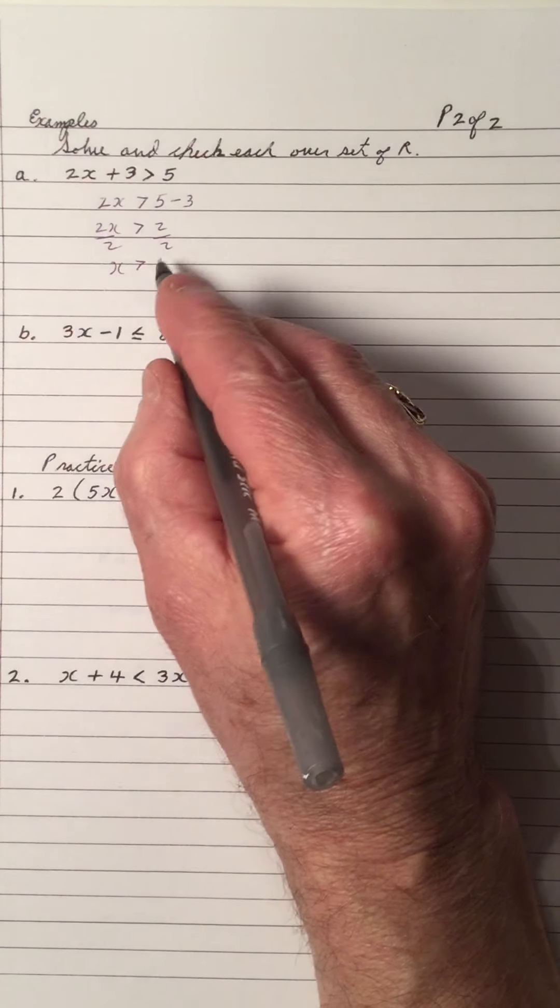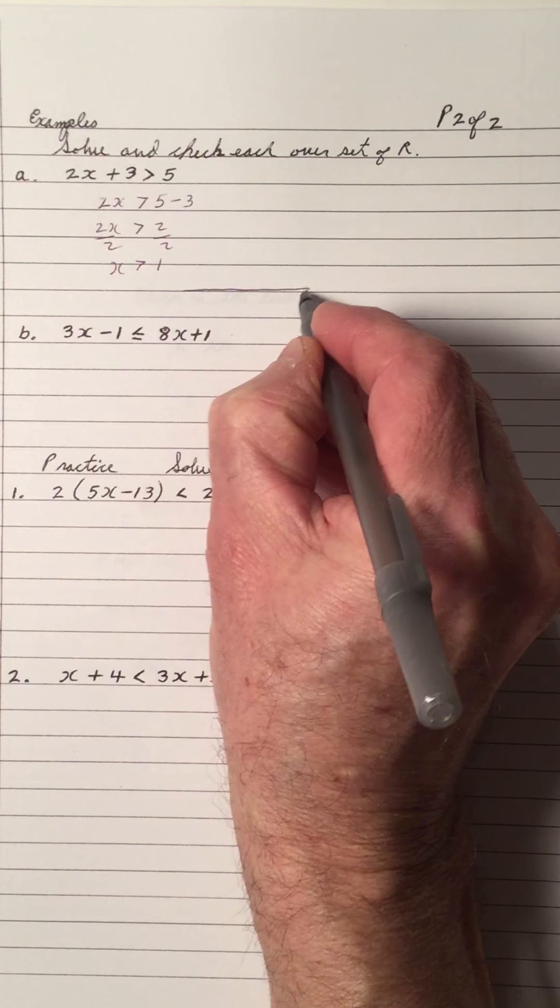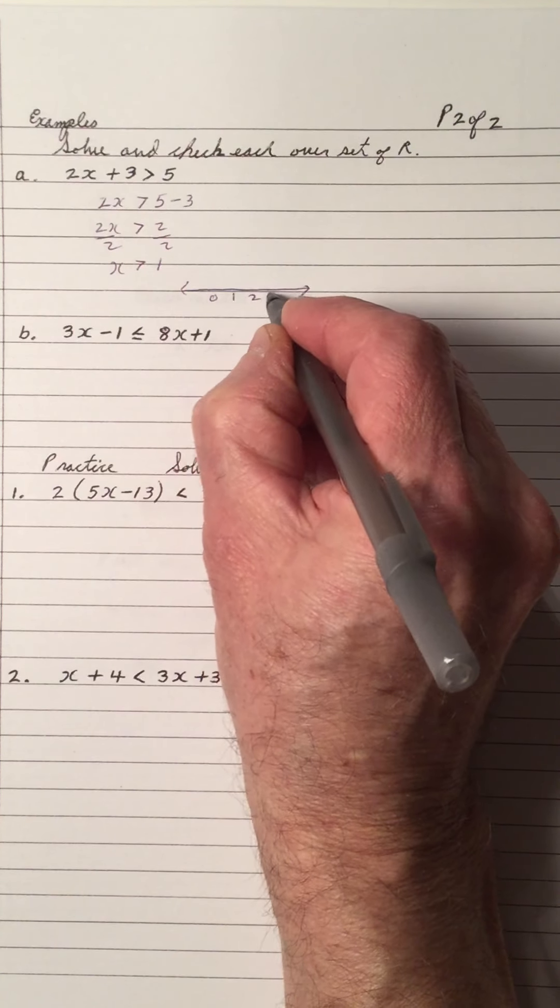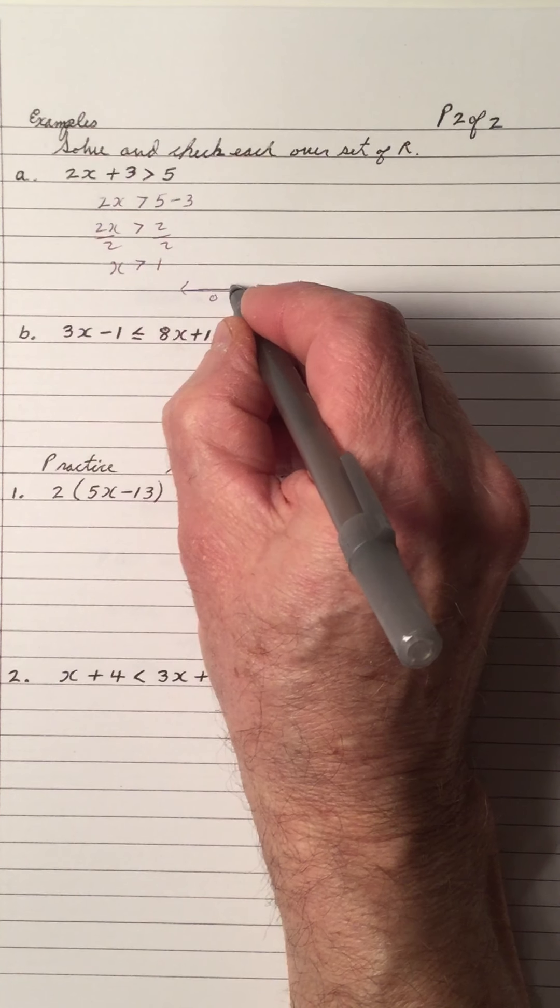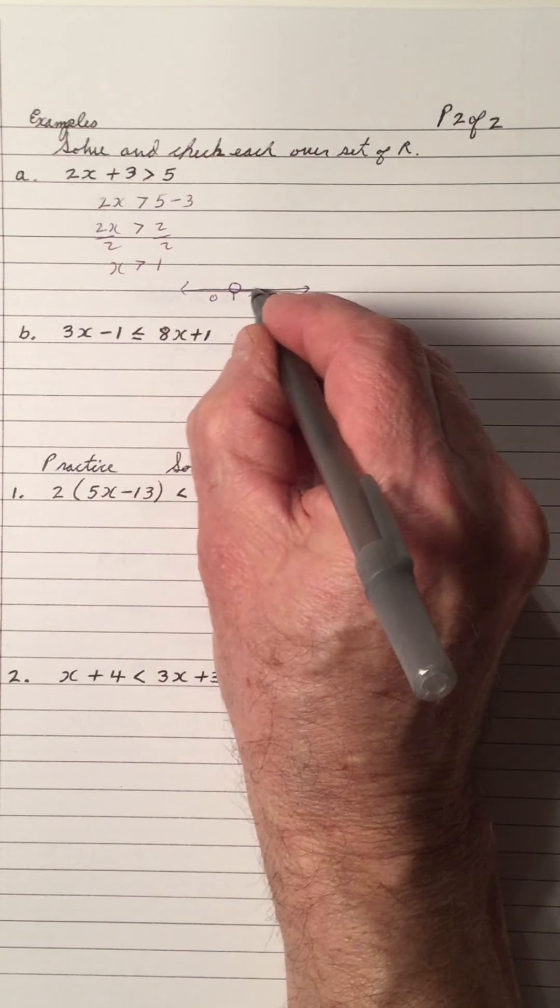So that means, because we're solving over the real numbers, if you graph this on the number line, we have a 0 and a 1 and a 2 and a 3. Notice it's greater than 1, so it's not 1. So this is a hollow dot shaded to the right.